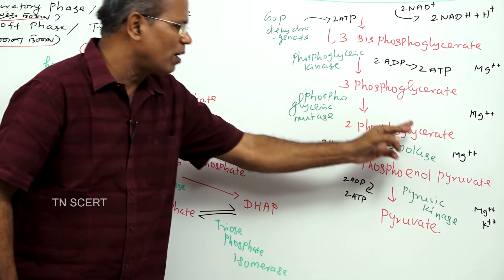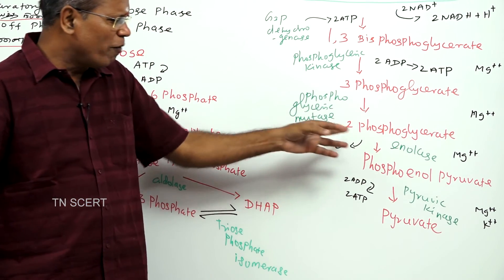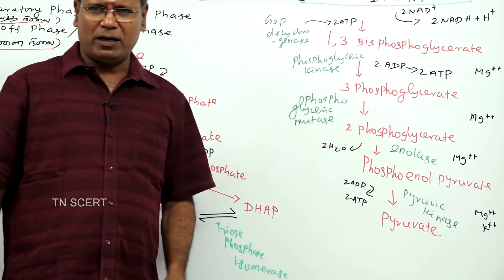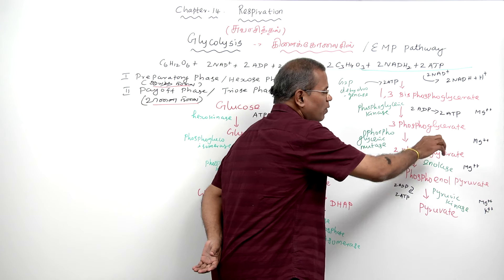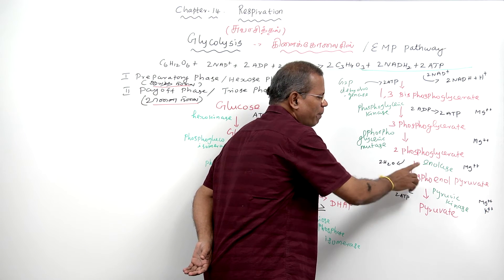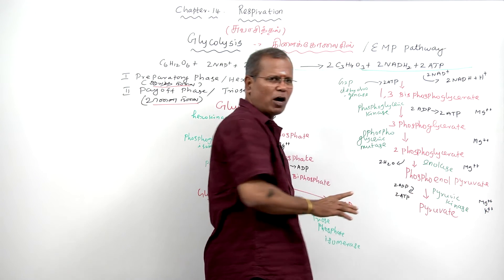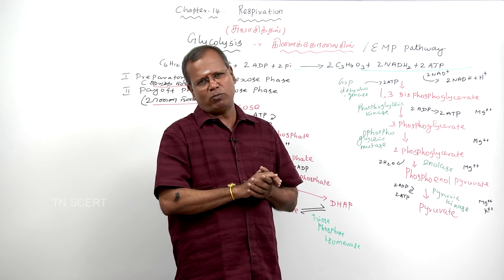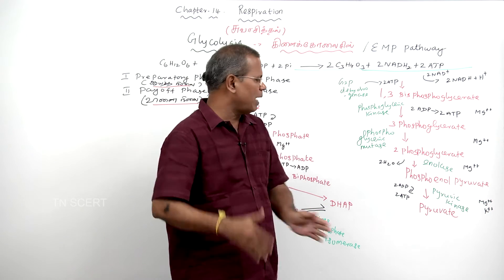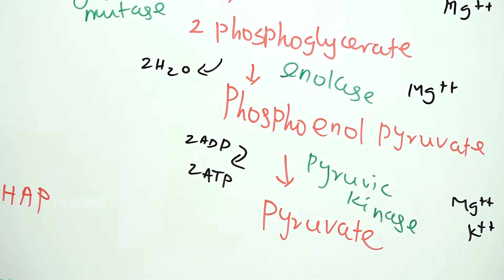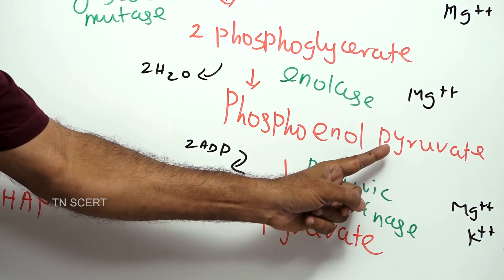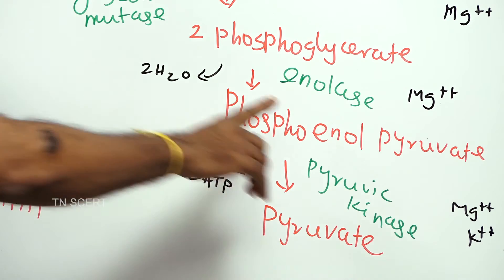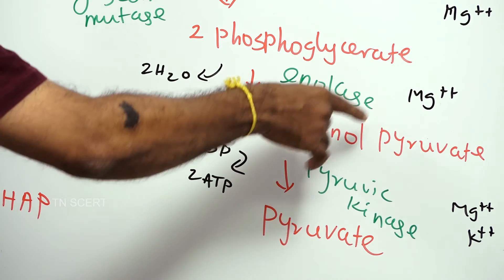2-phosphoglycerate has water removed to form phosphoenol pyruvate — this reaction is called enolation. Phosphoenol pyruvate is then dephosphorylated to form pyruvate.